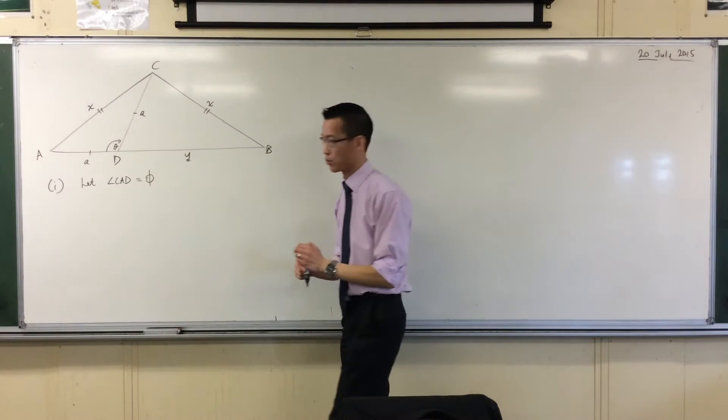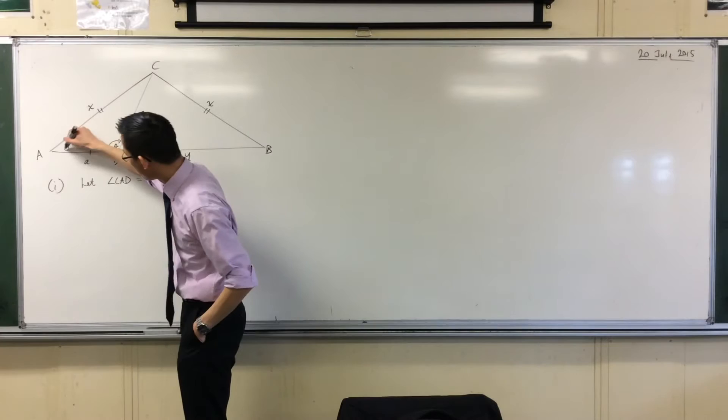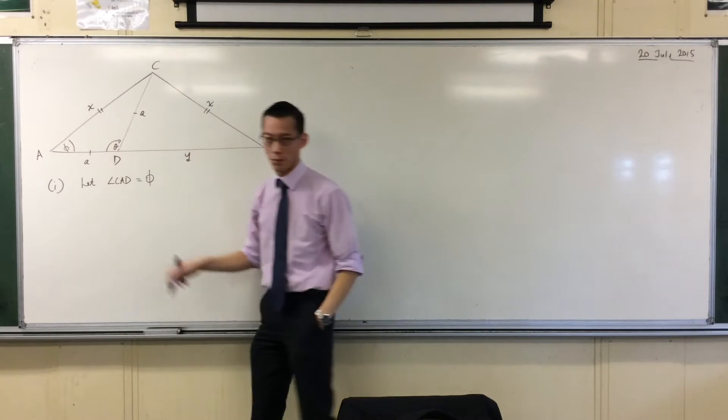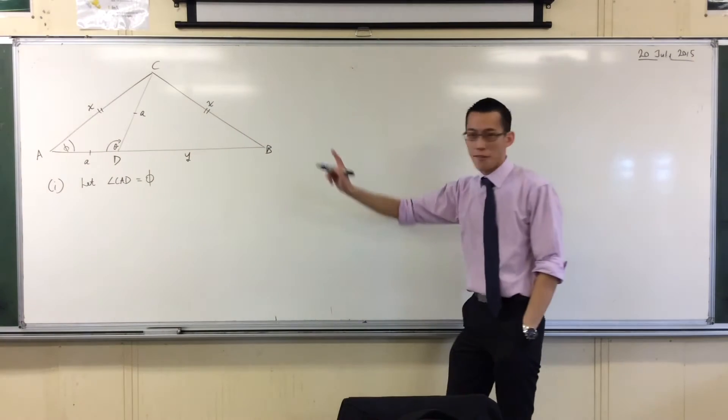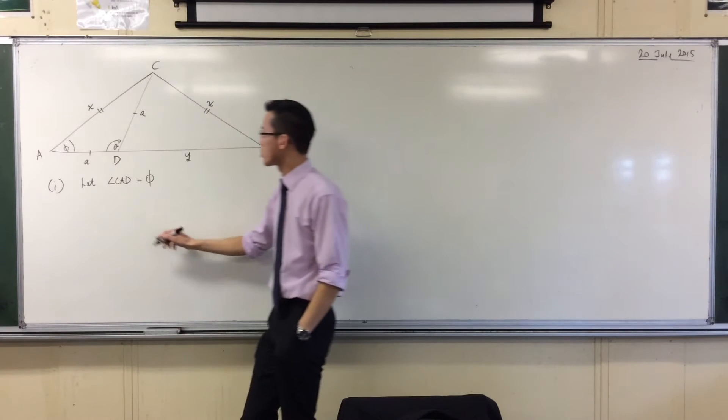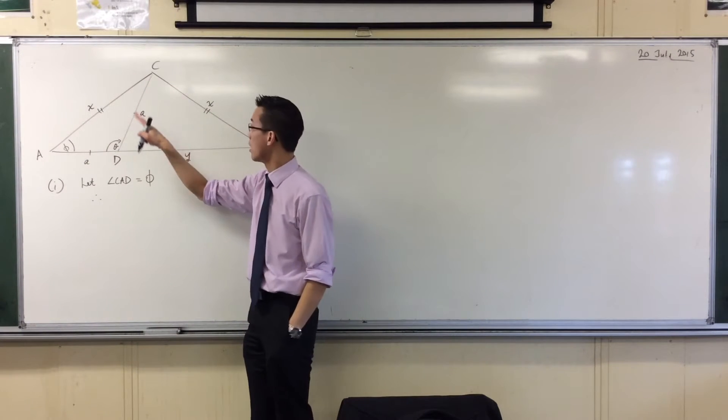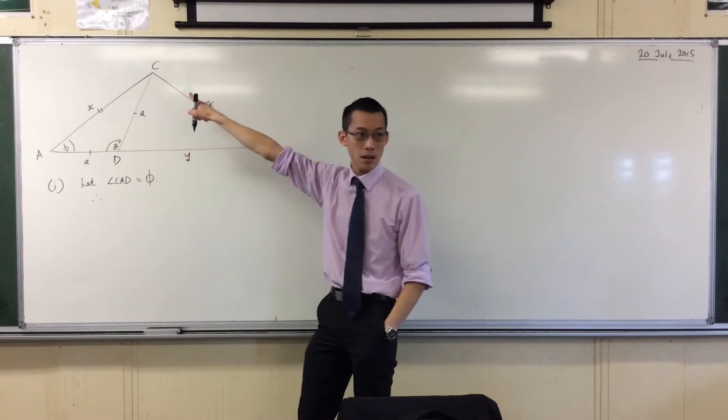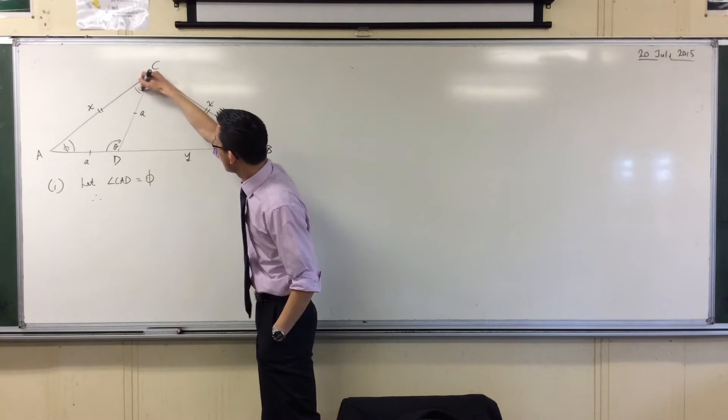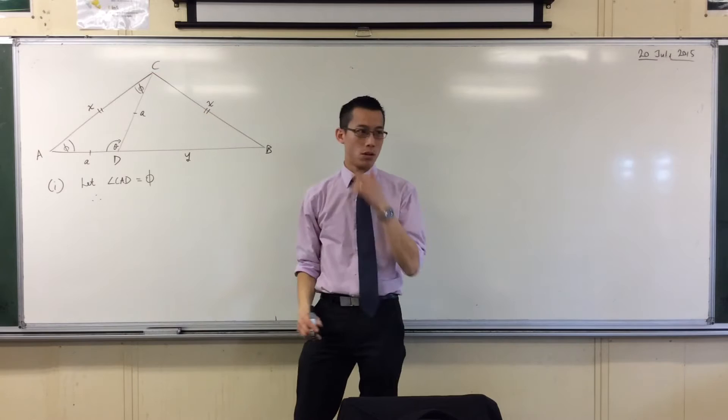And I have some information about angles. So I'm going to call this guy over here phi, just to go along with theta. If that's phi, where I'm going to go straight to is therefore, in this small triangle, I'm going to go to ACD. You see that up there? ACD up there is also equal to phi.